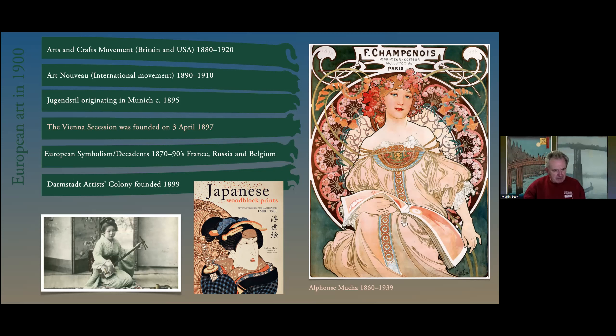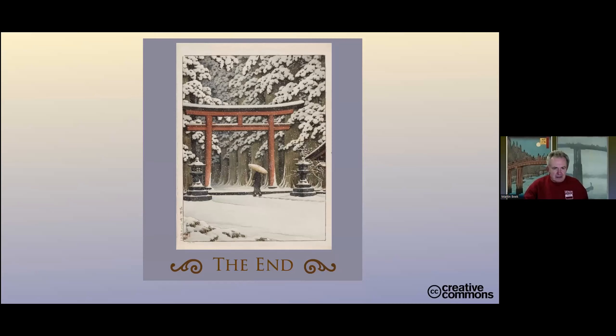We have this great meeting of East and West, starting with small beginnings in 1853, but it really changed the whole course of Western art. This evening I've just touched upon the many ways in which the art of Japan became so central to the art of Europe in the late 19th century.